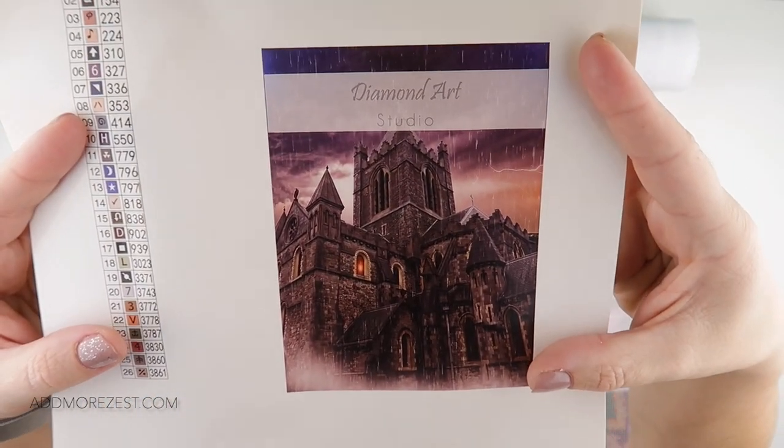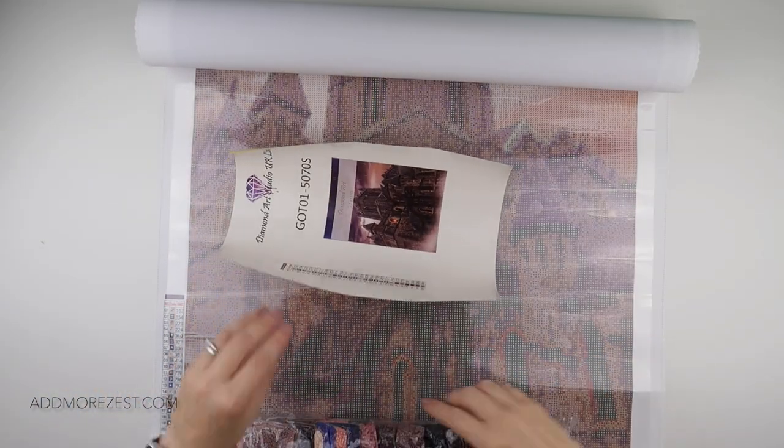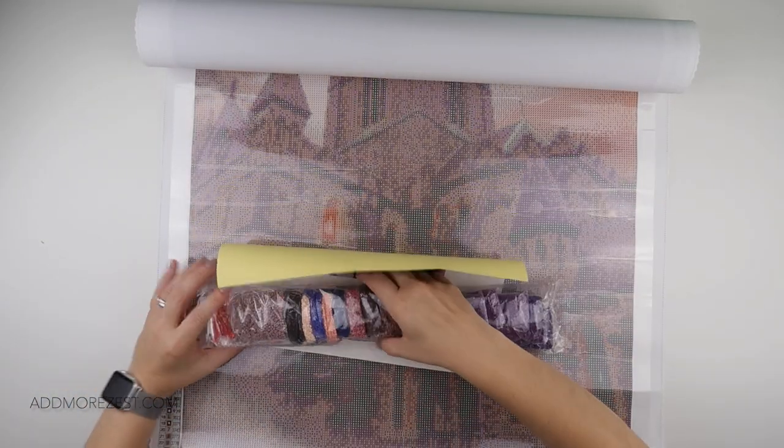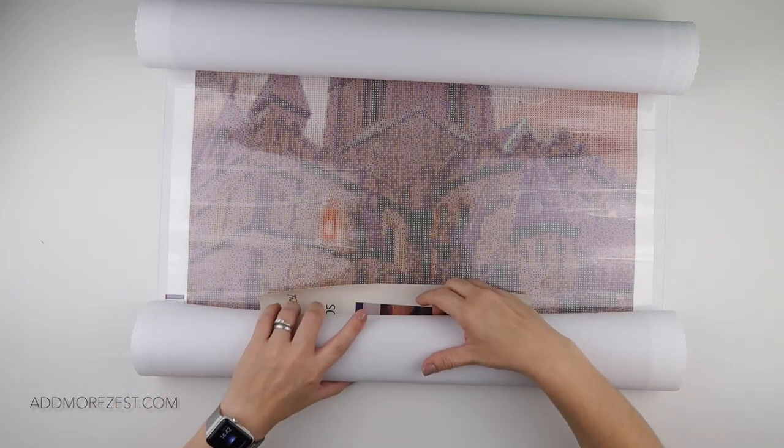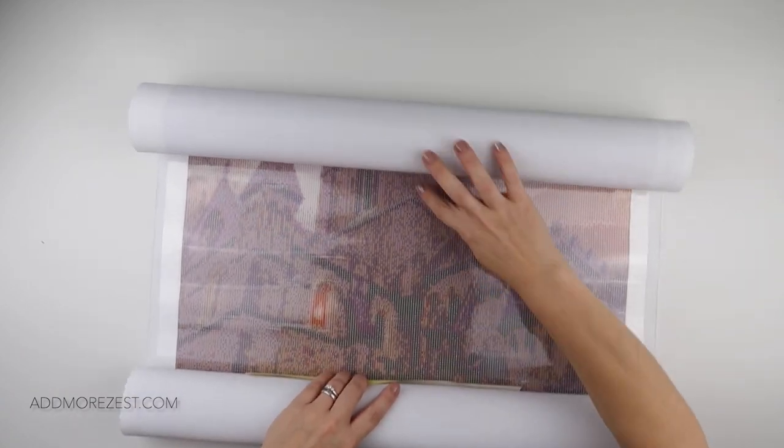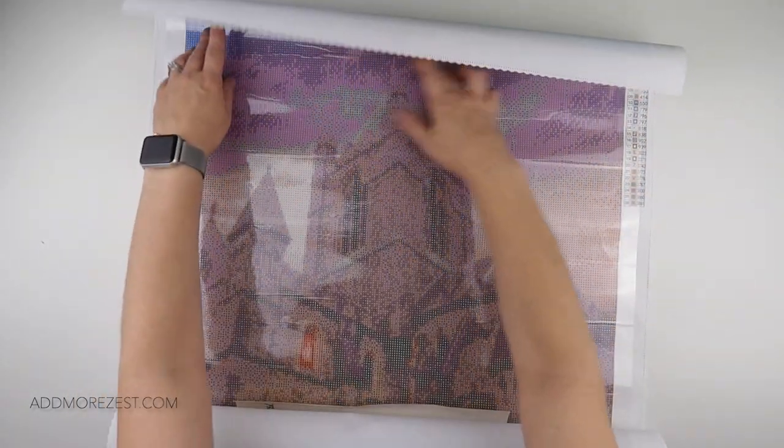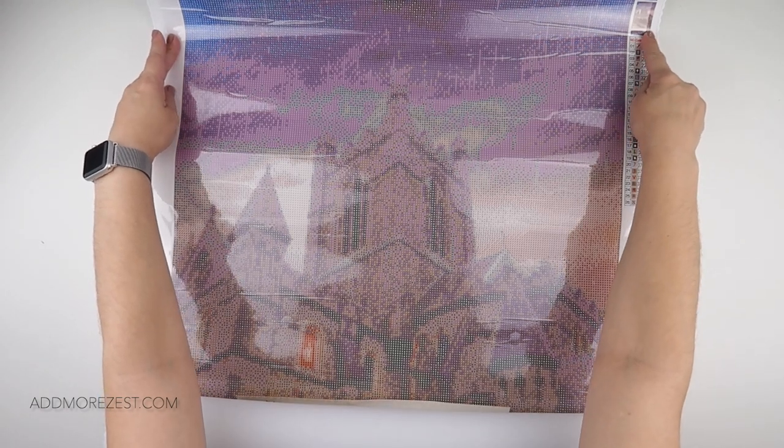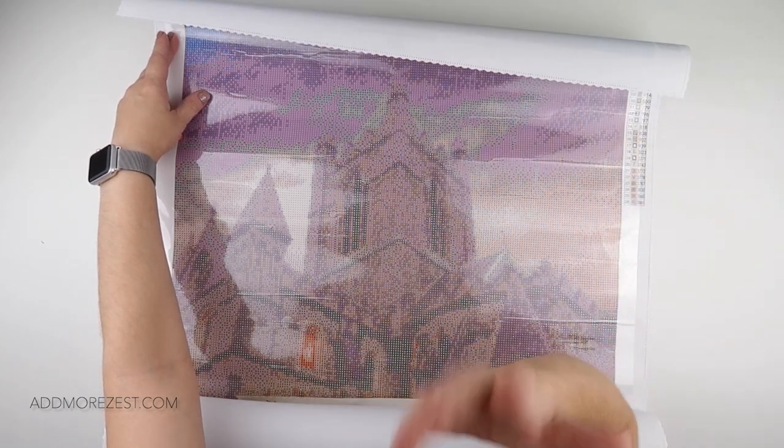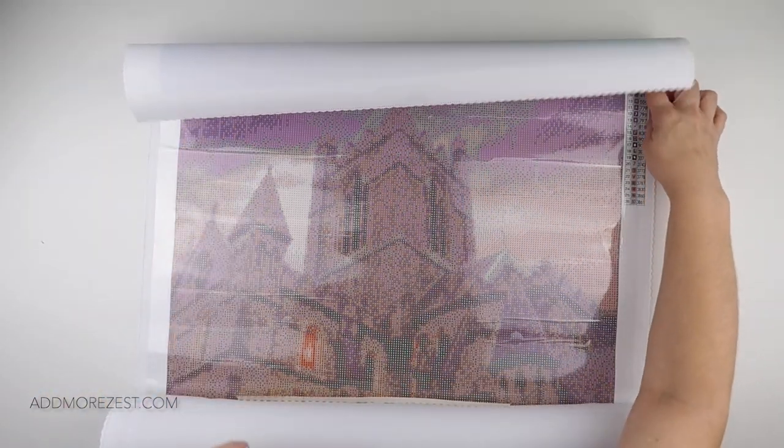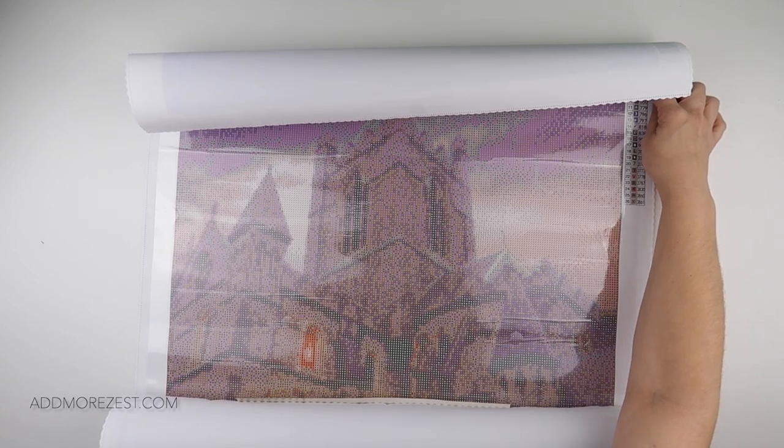That is Stormy Castle from Diamond Art Studio. I will pop a link down below to this painting in case you do want one for yourself. Don't forget there is a cheeky little discount code down there for you as well, just to help you buy more than one. That's the excuse you can use—pop in the discount code and pop a second painting in while you're there, because it would be rude not to. But anyway, thank you all so much for watching, and I'll speak to you all again soon.